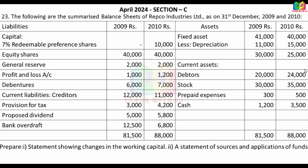The rule is: if an asset increases, it goes in the increase column; if it decreases, it goes in the decrease column. For liabilities, if a liability increases, it goes in the decrease column; if it decreases, it goes in the increase column.